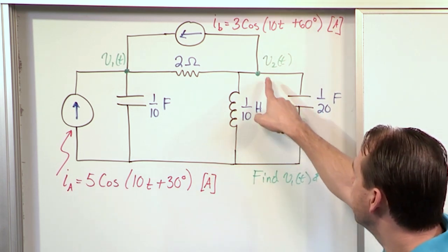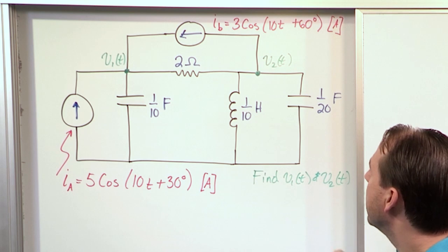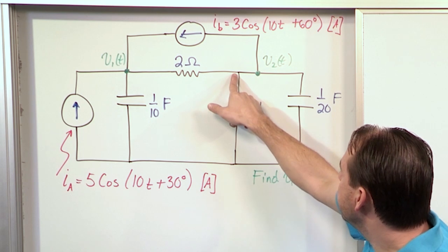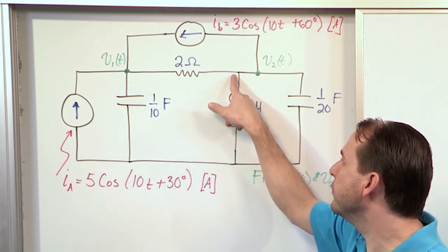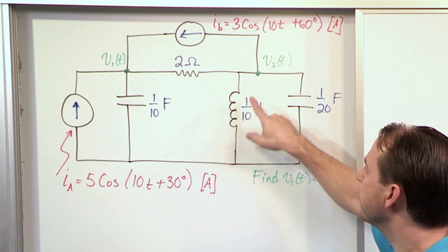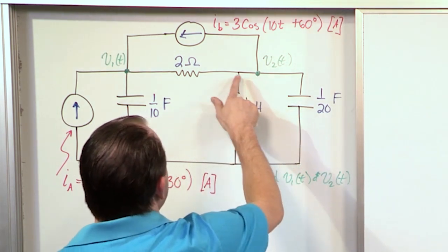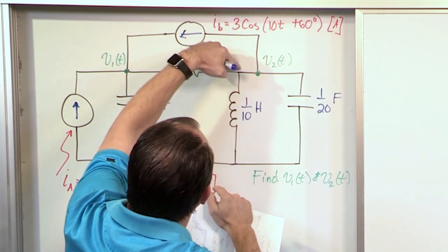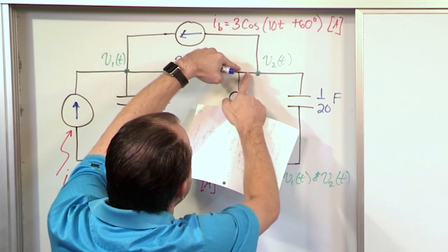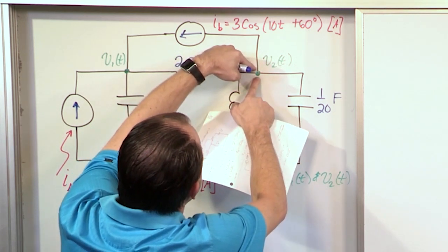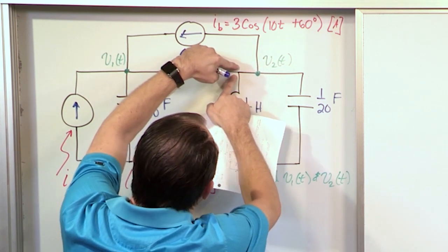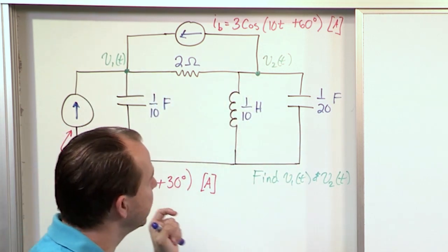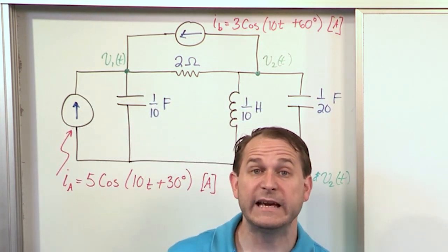One important thing to realize: when you look at this node on the diagram, it's drawn in a way that's meant to confuse you — you see this kind of thing a lot on exams. It looks like there's a node here and a separate node here, and some students start writing separate node equations for each. But if you physically built this circuit, this wire would be connected straight through because it's just a short circuit — just a wire with no resistance. So this connection point, even though it's drawn separately, is mentally the same node. Really, this is a single node here and a single node there.